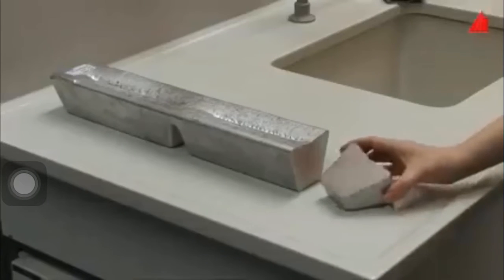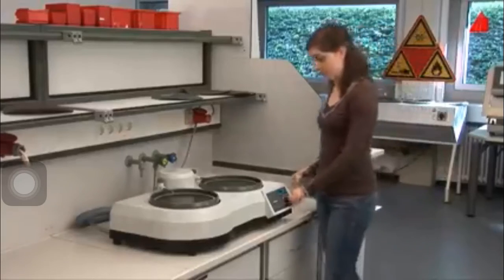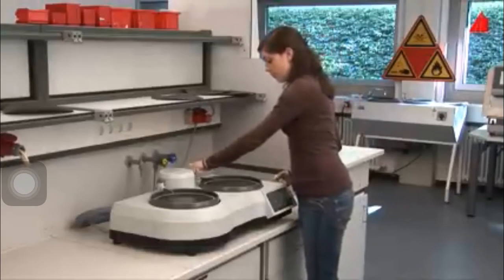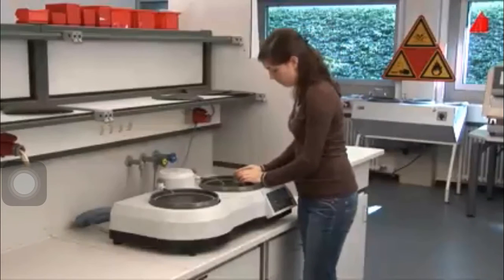Back into the lab, not much is to be seen on the cross section apart from the typical saw marks. In the next step, the material tester removes the saw marks by careful wet grinding with silicon carbide paper.